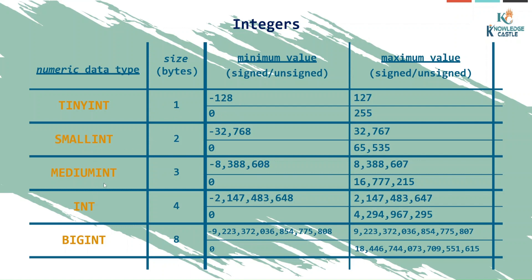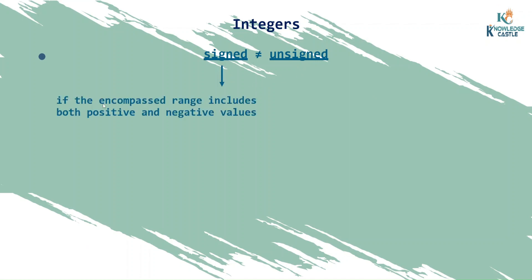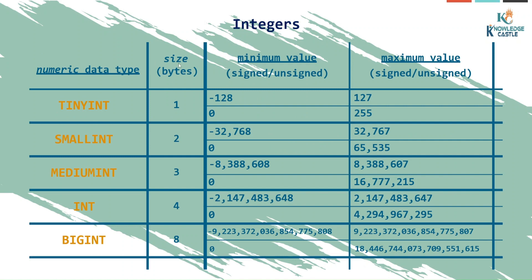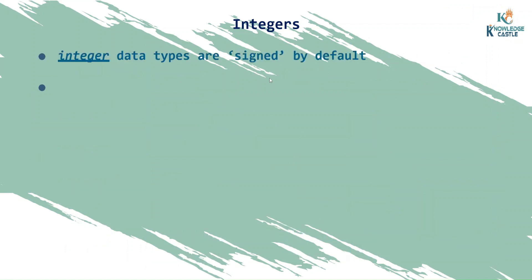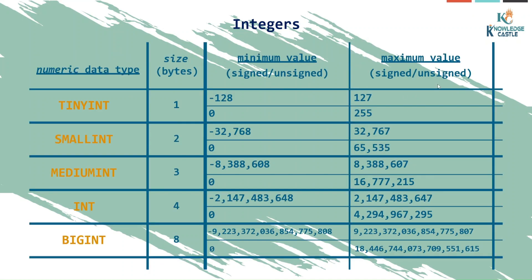For every different data type, there are two figures: one negative and one positive. These are known as signed and unsigned. If the value will include both positive and negative numbers, the data type must be signed. If integers are allowed to be only positive, the data type should be unsigned. Integer data types are signed by default, meaning they can take both negative and positive values.